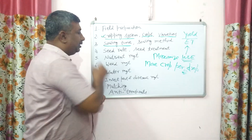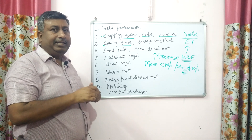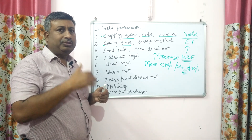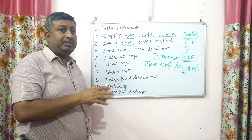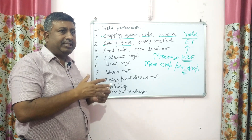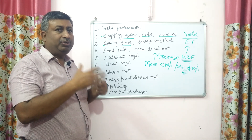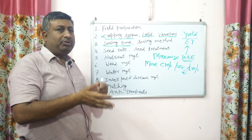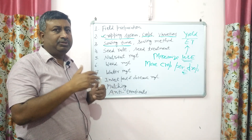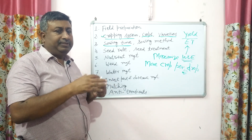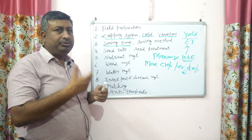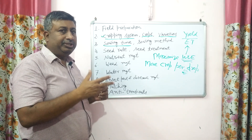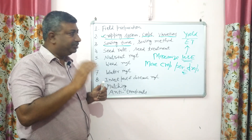Sowing time is very important. Timely sowing is critical. As the monsoon rains start, crops should be able to utilize the first rains. With the first rain, we should go for field preparation and sowing of the crop. If sowing is delayed by 10 or 14 days, the initial rain is not utilized for crop production — this is a wastage of water. Late sowing reduces yield and results in water wastage.